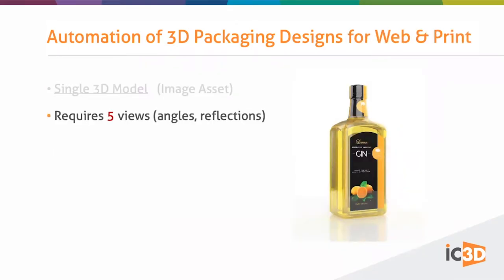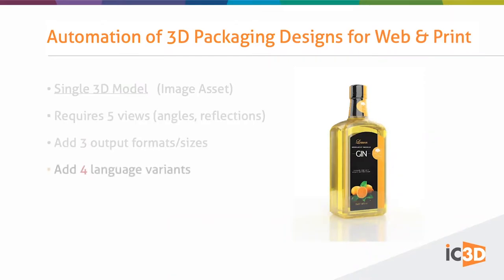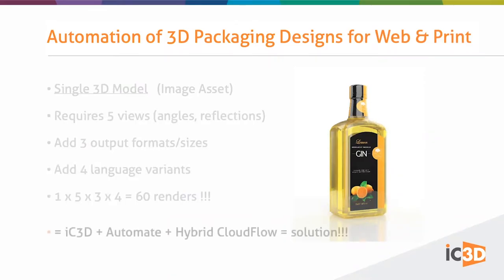If you take a single 3D model that requires five angles — maybe more for reflections — and add three output format sizes and four different language variants, you would effectively need 60 renders of that one model. That's where you need this workflow: IC3D, IC3D Automate, and your workflow solution like Hybrid Cloudflow or Kodak Prinergy. Together, that gives you your full automated system that generates your 3D pack shots on the fly.